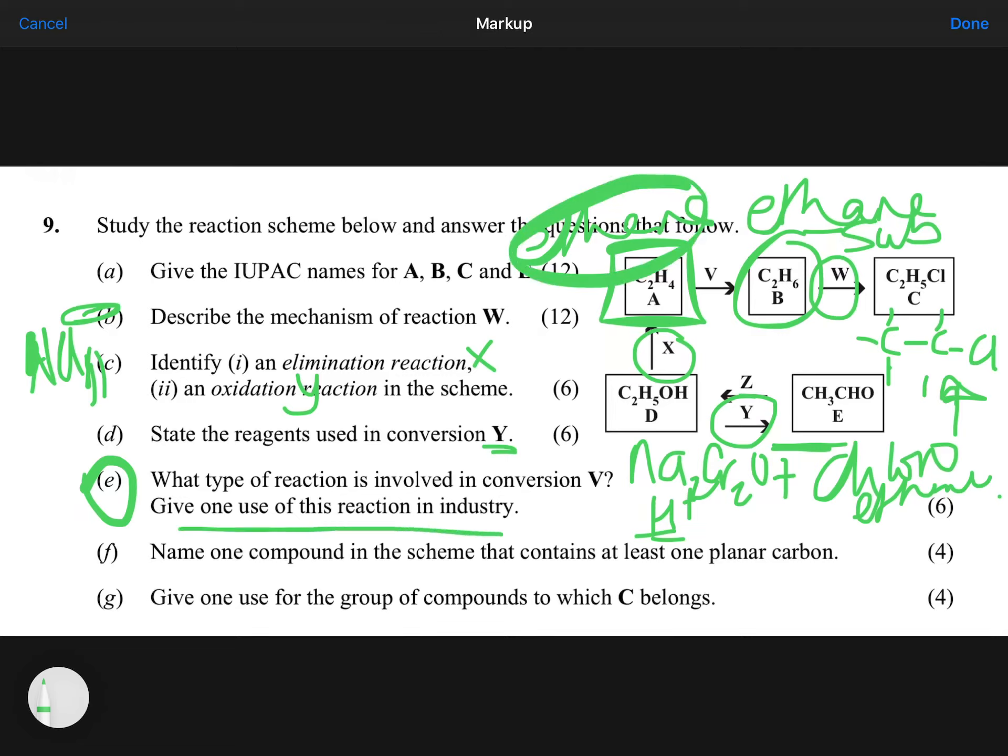Now, giving one use of this reaction in industry. At the bottom of page 236 in your revision book, they give you the hydrogenation, adding hydrogen. Adding hydrogen across the double bond, forming an alkane or ethane there is used in softening hard butter, you know, to make margarine or to make spreadable butters. So making margarine is your answer there.